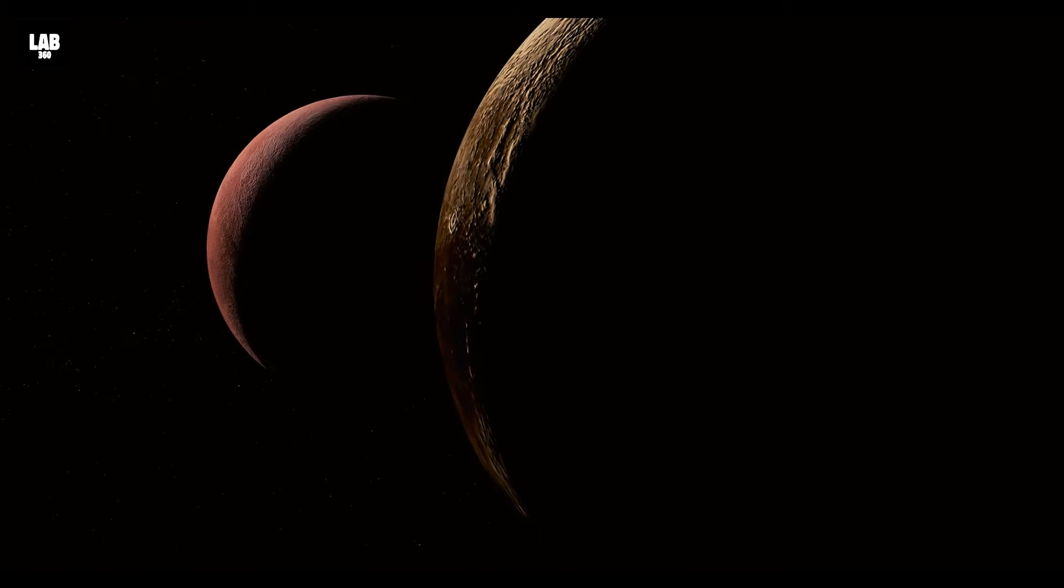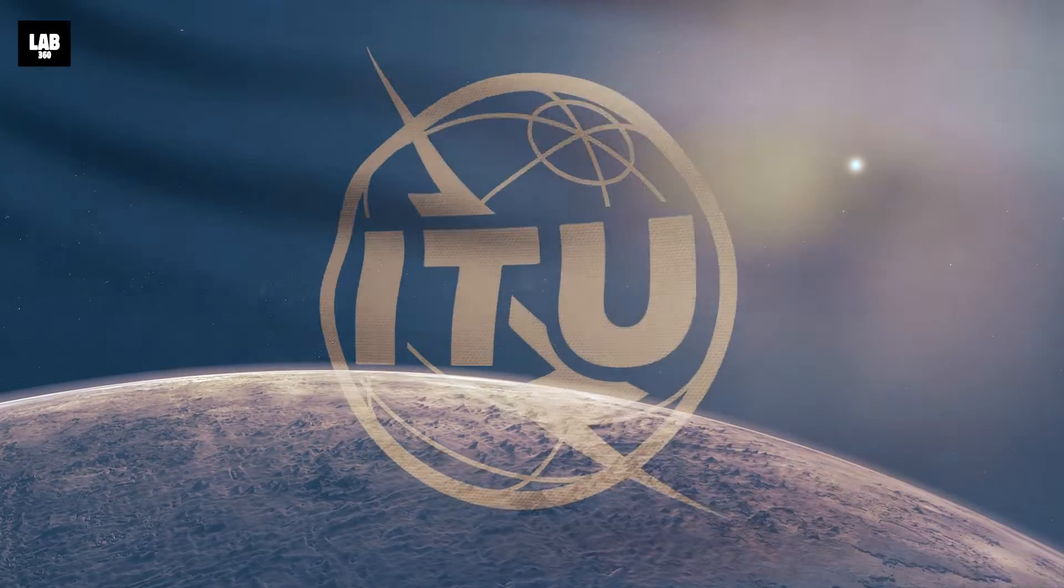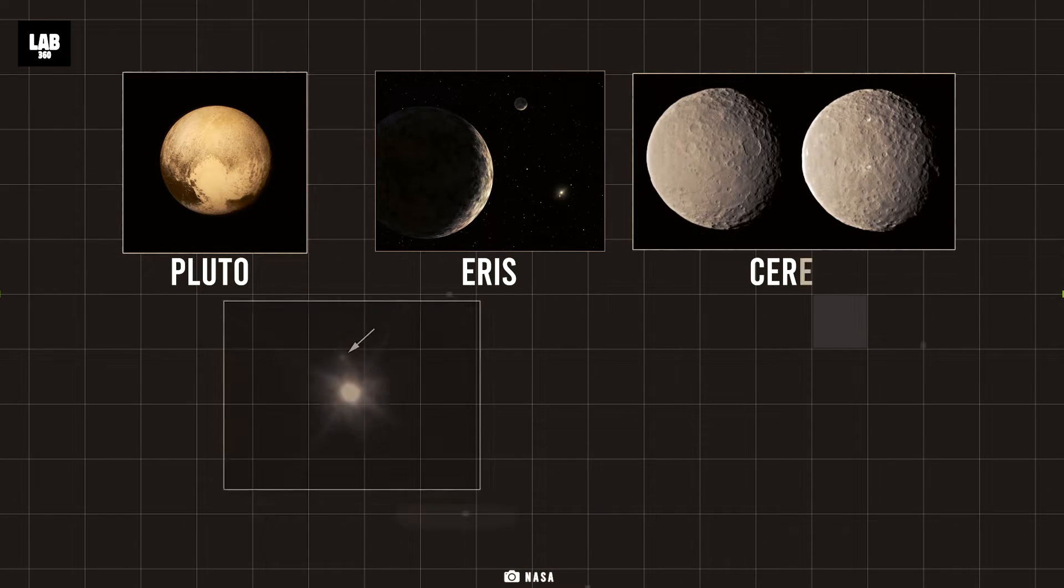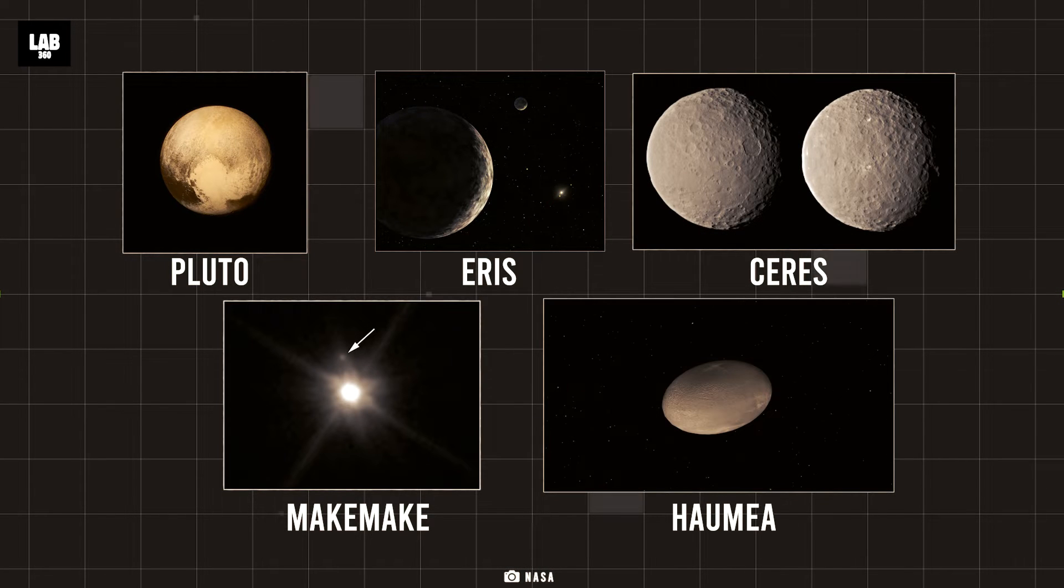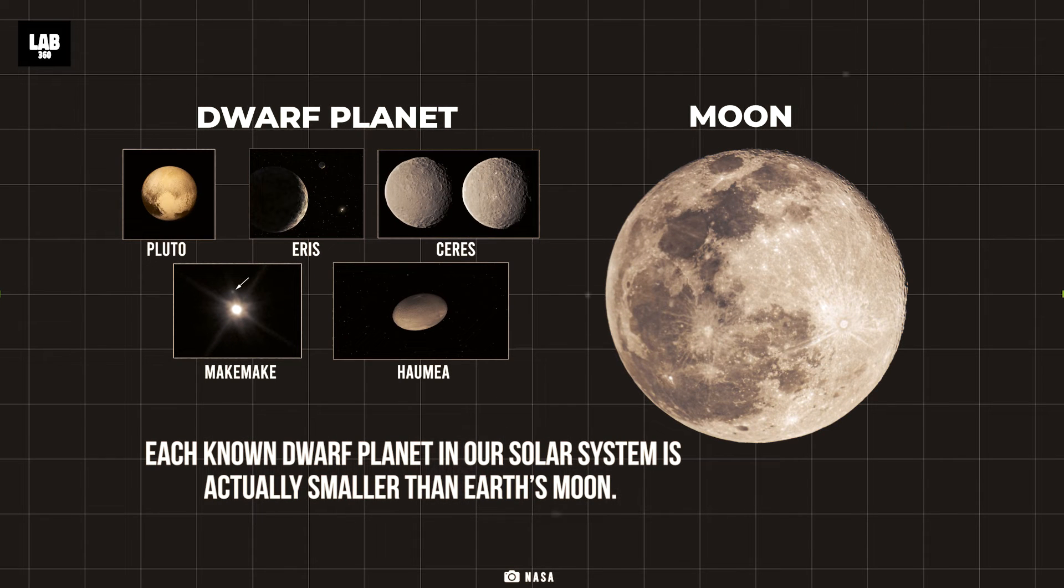According to the International Astronomical Union, there are officially five dwarf planets in the solar system: Pluto, Eris, Ceres, Makemake, and Haumea.